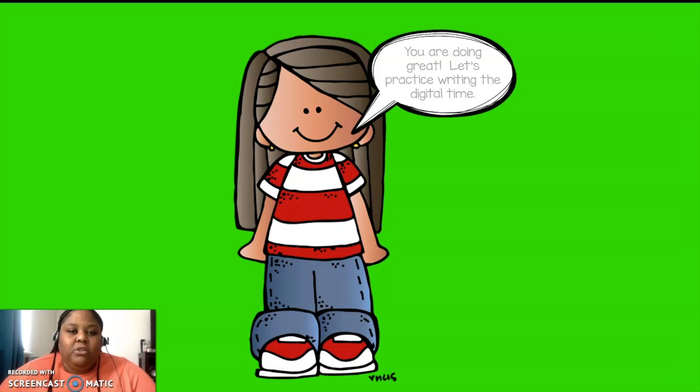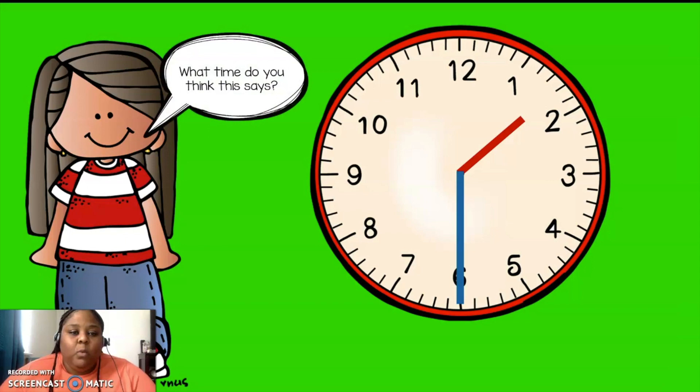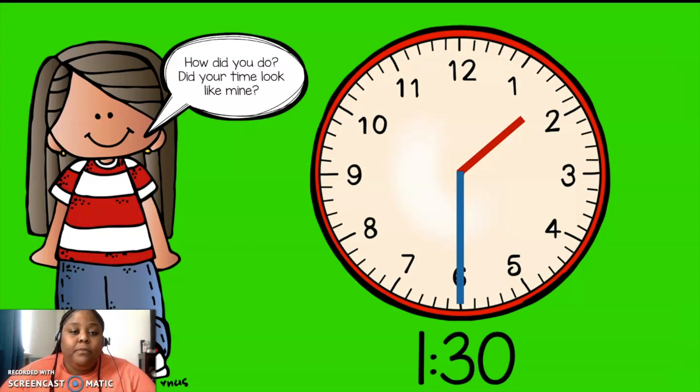Let's practice writing the digital time. What time is it on that clock? What time do you think it says? Write it on your whiteboard. Again, I'll give you some time. Great job, friends. It is 1:30. How did it go? How did it look? Did your time look like mine? I sure hope so.